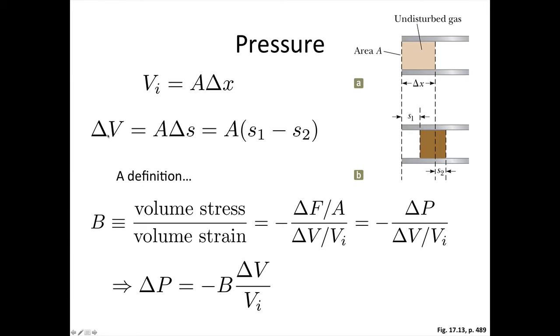The change in volume in this case is equal to this cross-sectional area times the difference between these two S's. So this will be S1 minus S2. If those ends both move the same amount, then this would be zero. But it's not, because there's a pulse going through, and so it depends on the distance from this end here.